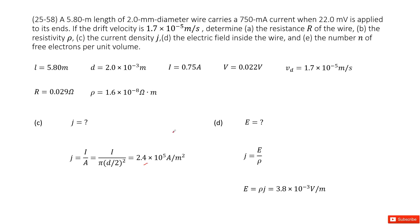The next part asks for the electric field density. We use the equation: current density J equals electric field density divided by ρ. So the electric field equals ρ times J. Since both ρ and J are already found, we input those two quantities to get the answer.